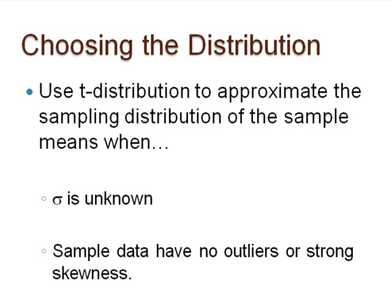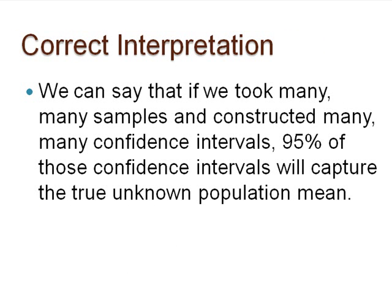Now I want to show that the following statement about the interpretation of t-confidence intervals is correct. We can say that if we took many, many samples and constructed many, many confidence intervals, 95% of those confidence intervals will capture the true unknown population mean.